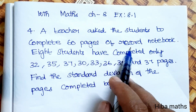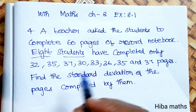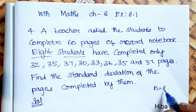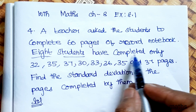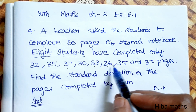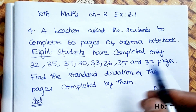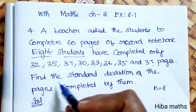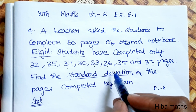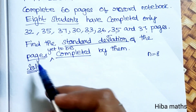8 students have completed the notebook. The 8 students' values are: they have completed only 32, 35, 37, 30, 33, 36, 35, and 37 pages. Find the standard deviation of the pages completed by them.